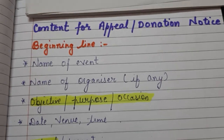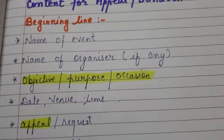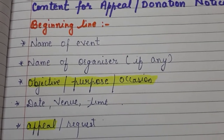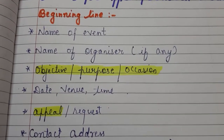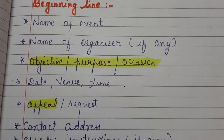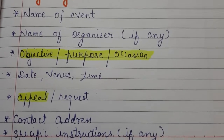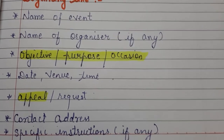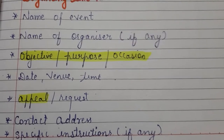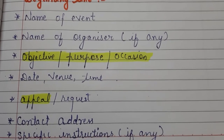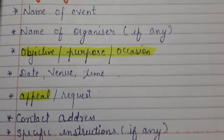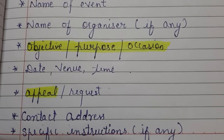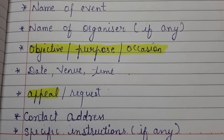Content for appeal donation notice. Firstly, we will write down the beginning line. You know very well about the beginning line — 'This is to inform all the students' like that. Then you will write the name of the event, whether there is a donation collection or we are appealing for something. Then we will write down the name of the organiser — who is organizing this event.